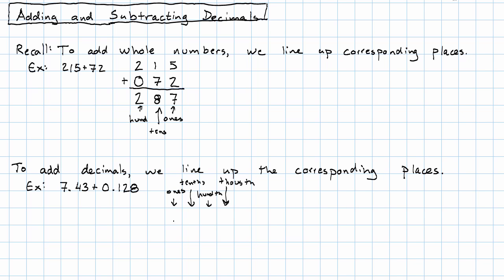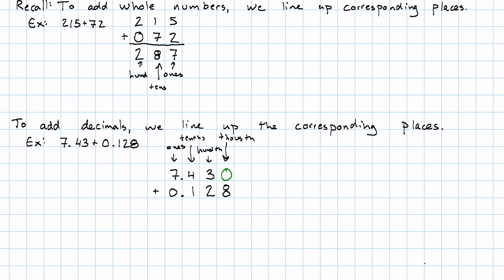So 7 ones, 4 tenths, 3 hundredths, plus 0 ones, 1 tenth, 2 hundredths, and 8 thousandths. And just like we did before, we can write in the 0 thousandths in our first number to help us keep track. And then we add down the columns.